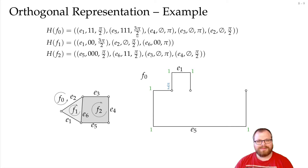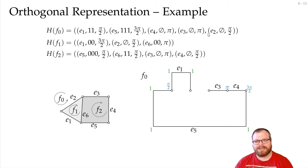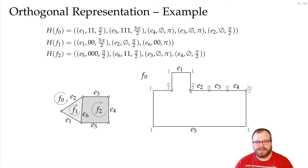Next we have a 3pi/2 angle, so we turn left and draw edge E4 without any bends. Then a pi angle — still going left — and we draw E3 without any bends. Again a pi angle, and we draw E2 without any bends. Finally a pi/2 angle, which works out, and we have drawn the outer face.